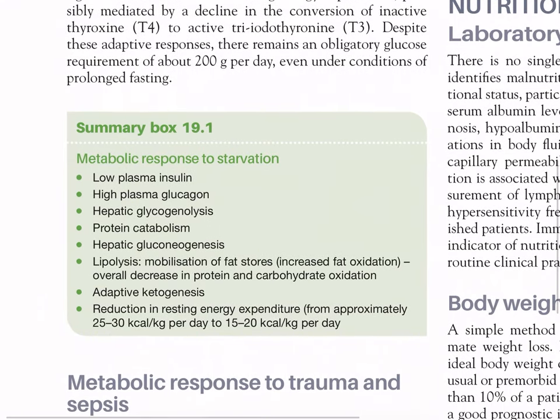Summary Box 19.1 — Metabolic response to starvation: low plasma insulin, high plasma glucagon, hepatic glycogenolysis, protein catabolism, hepatic gluconeogenesis, lipolysis and mobilization of fat stores, increased fat oxidation, overall decrease in protein and carbohydrate oxidation, adaptive ketogenesis, and reduction in resting energy expenditure from approximately 25–30 kcal/kg/day to 15–20 kcal/kg/day.